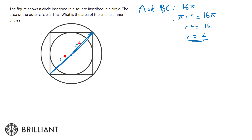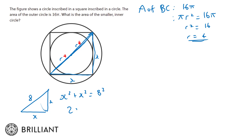So the longest diagonal of the square is 8. We can use Pythagoras: we have a right angle triangle where both side lengths are equal because it is a square, and the hypotenuse is 8. So x squared plus x squared equals 8 squared, giving us 2x squared equals 64, x squared equals 32, so x equals the square root of 32. Now, how can the side length of the square help us find the radius of the smaller circle?